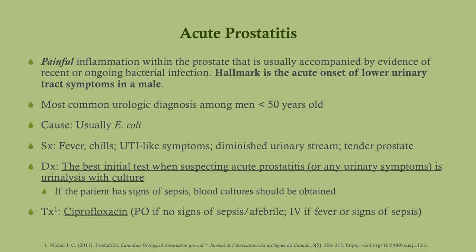Acute prostatitis is a painful inflammation within the prostate, usually accompanied by evidence of a recent or ongoing bacterial infection, which can result in sepsis. The hallmark of prostatitis is lower urinary tract symptoms in a male — UTI-like symptoms such as frequency, urgency, and pain on urination. The most common cause is E. coli.